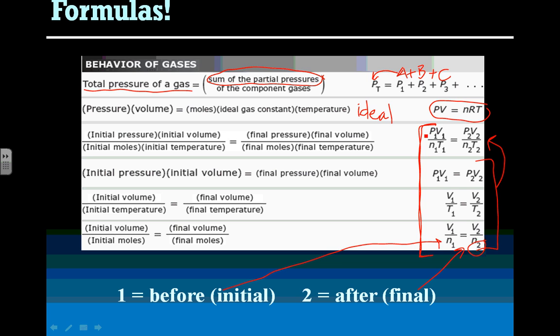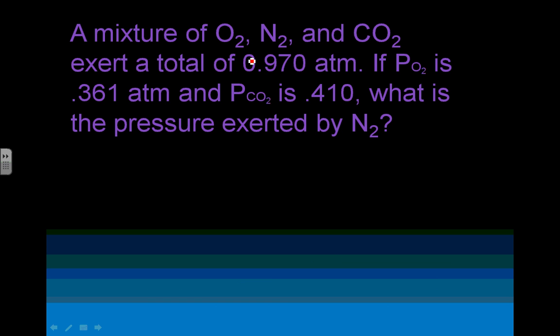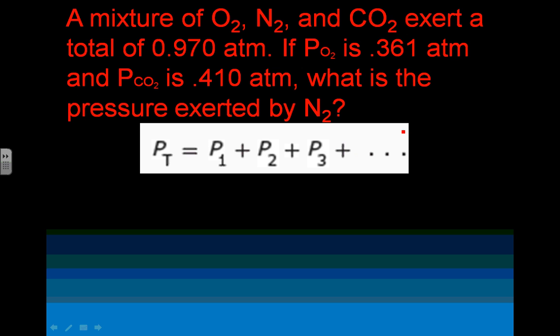First problem here, a mixture of oxygen, nitrogen, and carbon dioxide exert a total pressure of 0.970 atmospheres. If the pressure of oxygen is 0.361 atmospheres, the pressure of carbon dioxide is 0.410 atmospheres. What is the pressure exerted by nitrogen gas? Well, if you look at the equations, the equation you should choose is this one right here. We have the total pressure, which is 0.970.